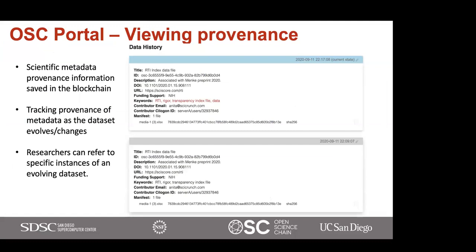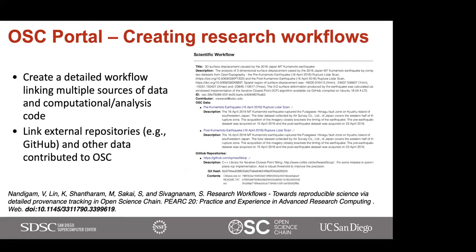As the data set evolves or changes, the Open Science Chain portal allows you to view the provenance history as changes occur. Researchers can refer to a specific instance of this evolving data set if they are using it in their research. The portal also allows researchers to create a detailed workflow, linking multiple sources of data — their own or previously submitted by someone else on the portal — and also the computational analysis code by linking to external repositories like GitHub or GitLab, creating a whole workflow showing the various data used and where the code resides for analysis.